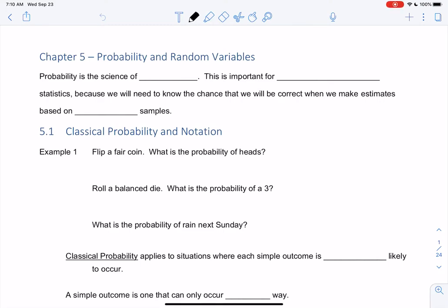All right, let's start chapter 5, probability and random variables. So the first couple sections will be probability, and then we'll get into what a random variable is.